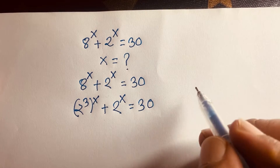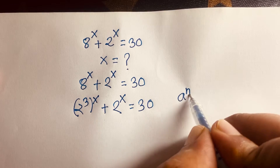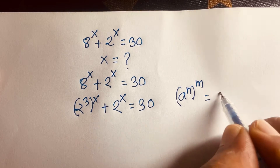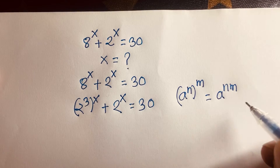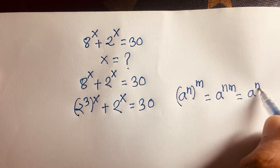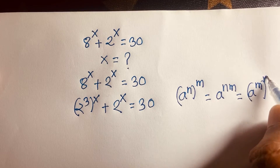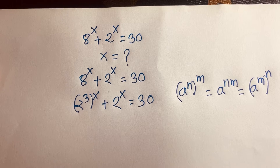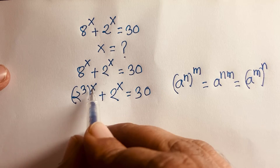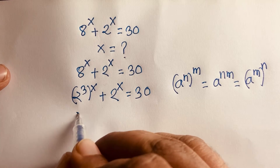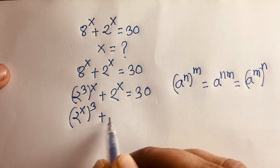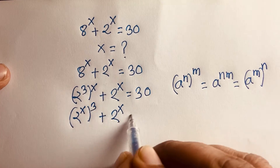One of the exponential rules states that a to the power n, whole to the power m, equals a to the power n×m. Applying this rule, 2 to the power 3 whole to the power x becomes 2 to the power x, whole to the power 3. So we get 2 to the power x, whole to the power 3, plus 2 to the power x, is equal to 30.